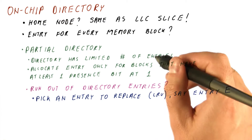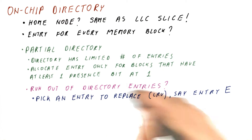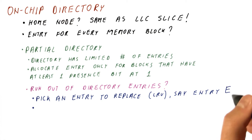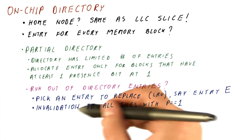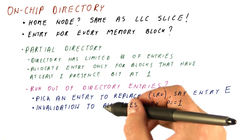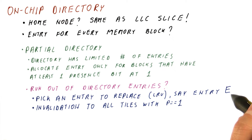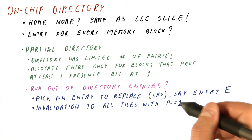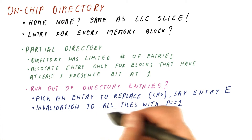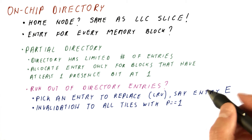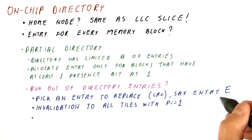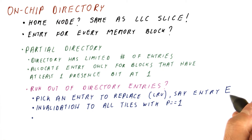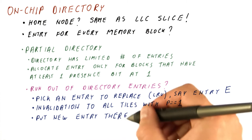For the new entry we put in, we know what to do: we set that presence bit to one. The question is what do we do about entry E? Because that entry might have some presence bits set. For every presence bit that is set in the entry we are replacing, we need to send an invalidation to the corresponding cache. This entry says that block is in some caches, so we tell those caches to either invalidate or send us the data and invalidate, so that all presence bits can be set to zero. At that point, entry E can be removed, and we can put a new entry there.